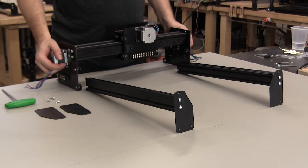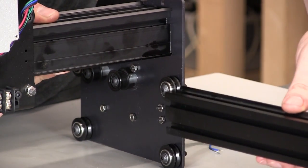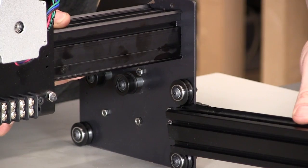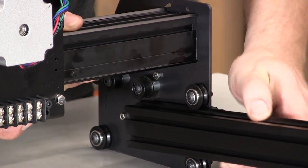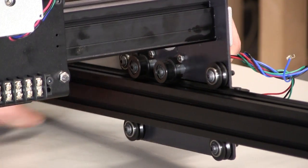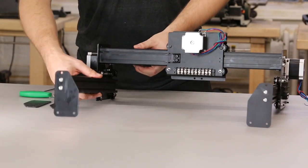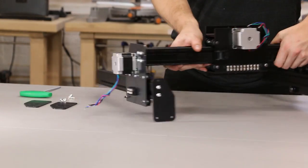Now we're going to slide the gantry onto the two Y-axis that we just created. Slide the maker slide between the V-wheels. If it's not going in smoothly, try adjusting the eccentric nuts on your Y motor mount plates, making sure that the bolt is all the way down. This gives us the most room between V-wheels.